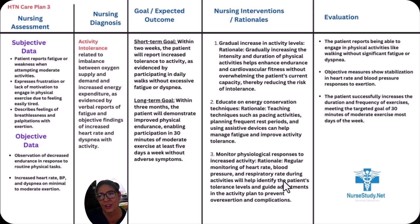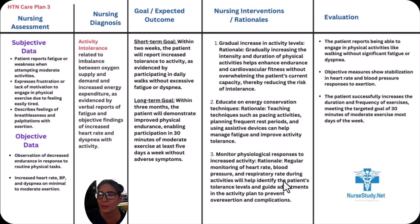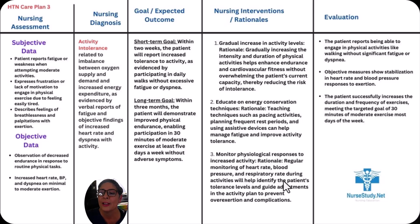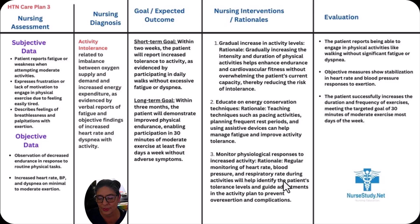Evaluation: The patient reports being able to engage in physical activities like walking without significant fatigue or dyspnea. Objective measures show stabilization in heart rate and blood pressure in response to exertion. The patient successfully increases the duration and frequency of exercises, meeting the target goal of 30 minutes of moderate exercise most days of the week, starting slow and increasing gradually.